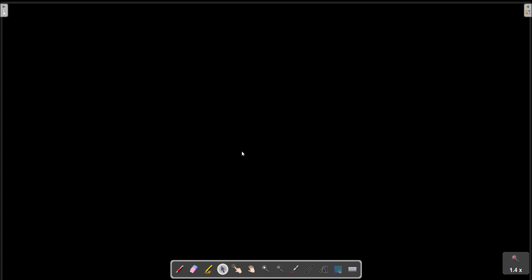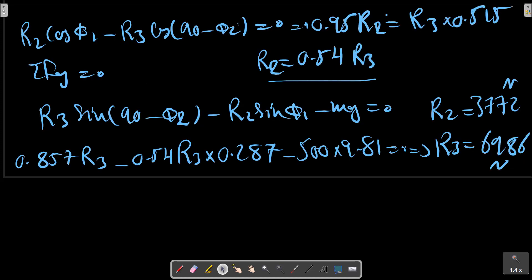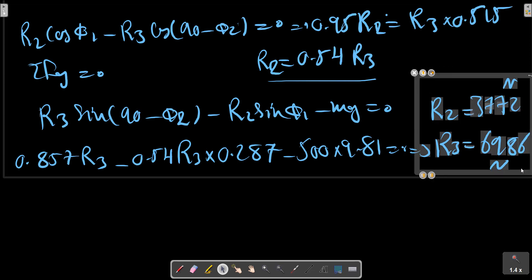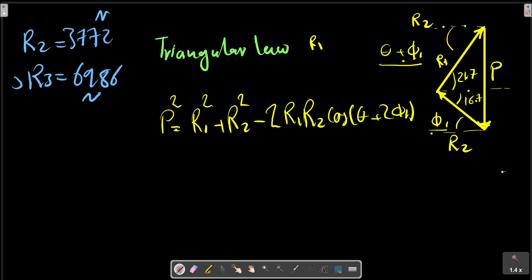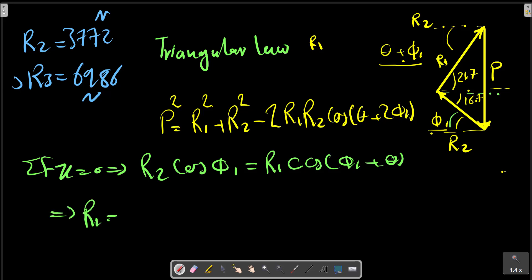In the next page, consider these quantities and this correlation. For the wedge we have this relation also in sigma Fx equals zero: R2·cos(phi_1) must equal R1·cos(phi_1 + theta). R1 can be calculated.